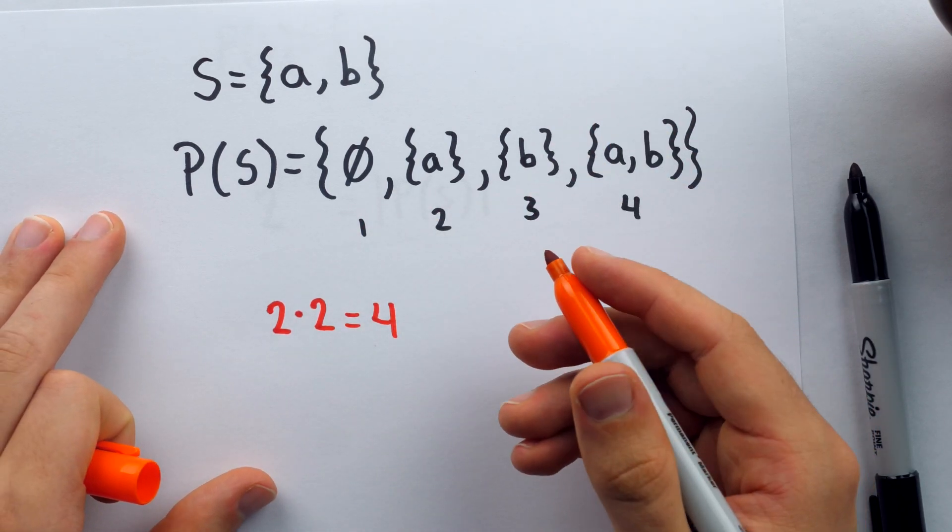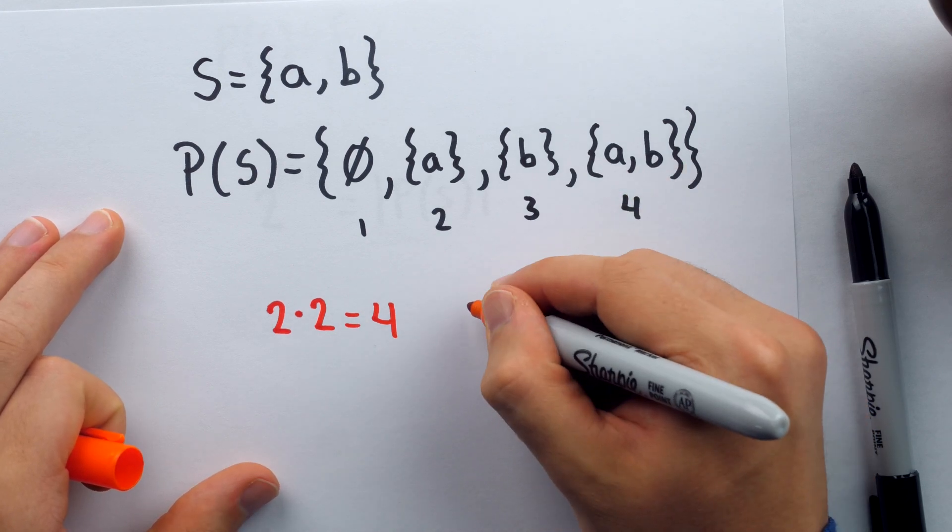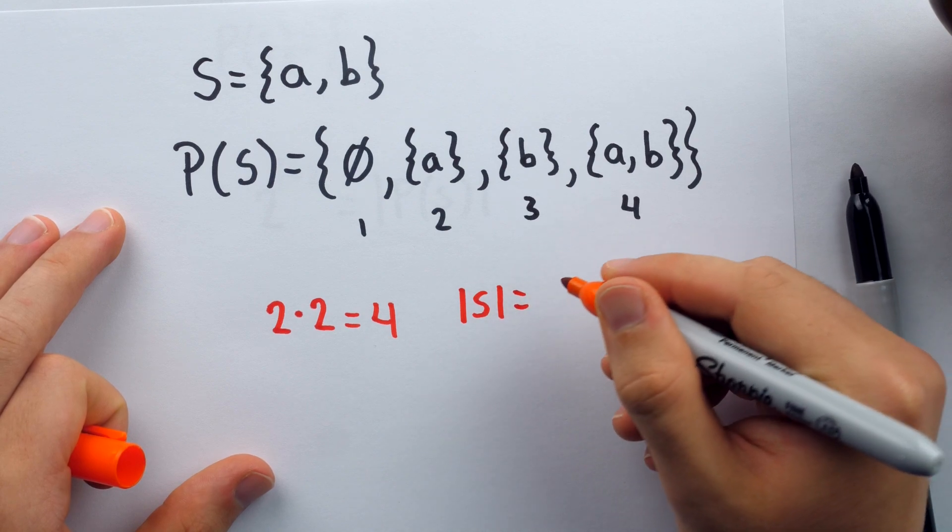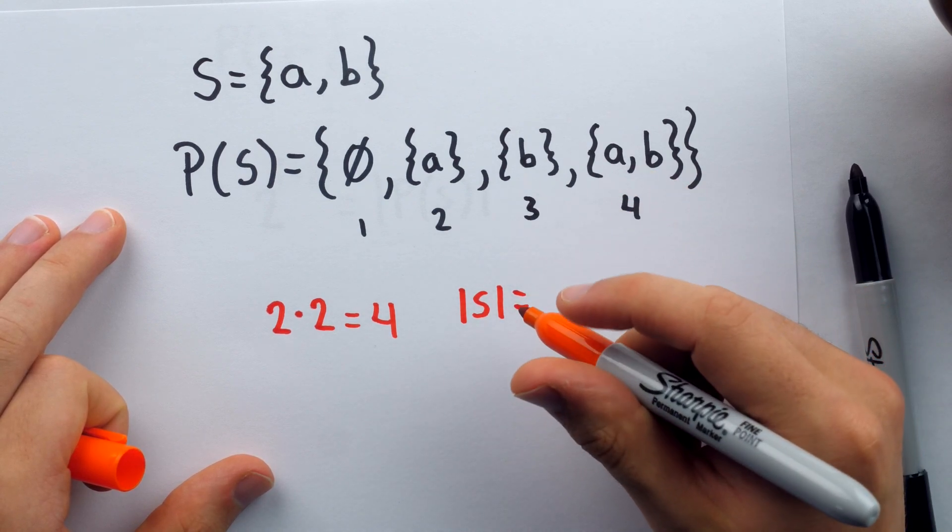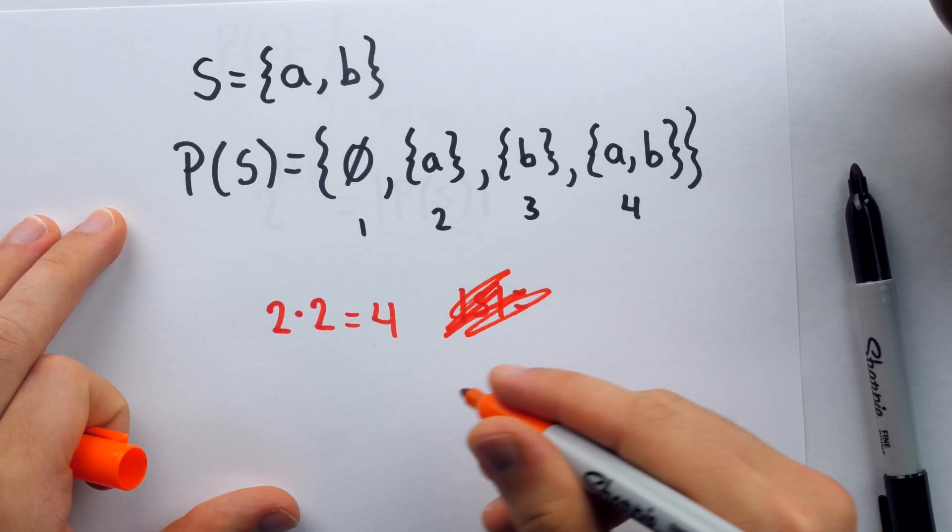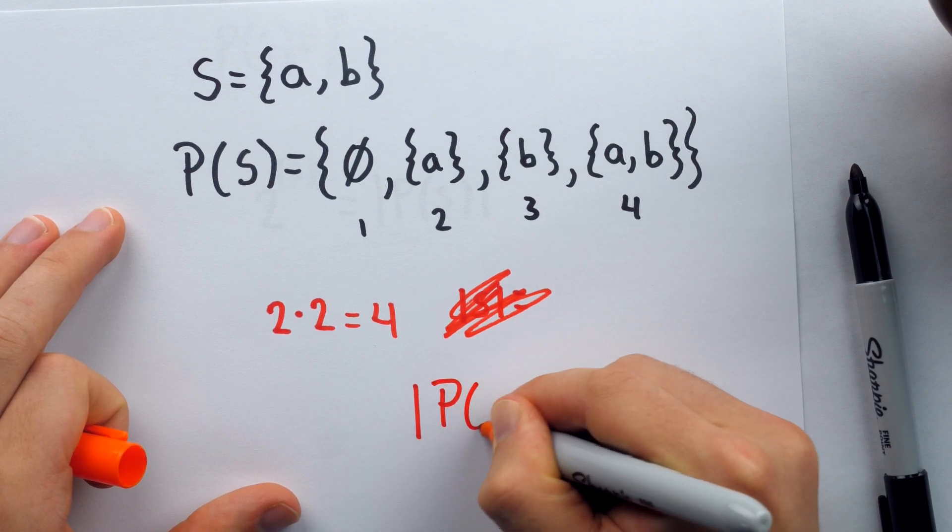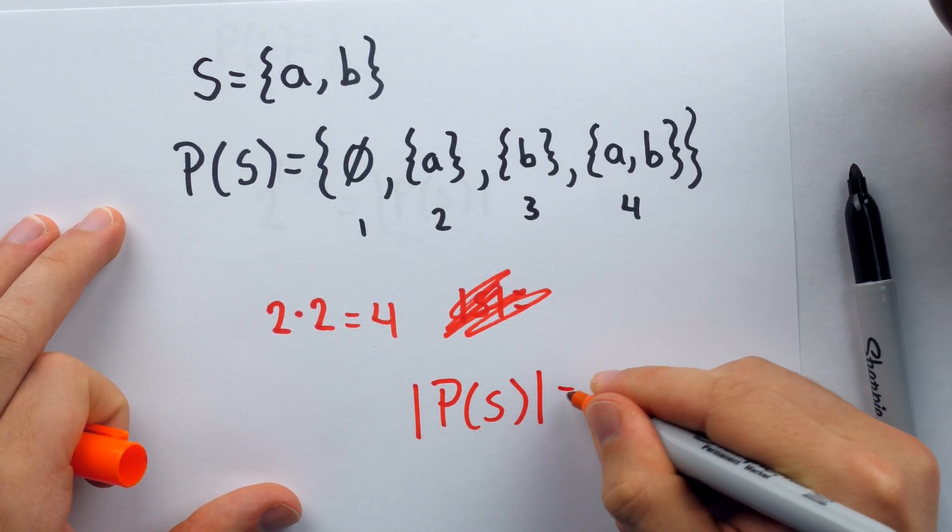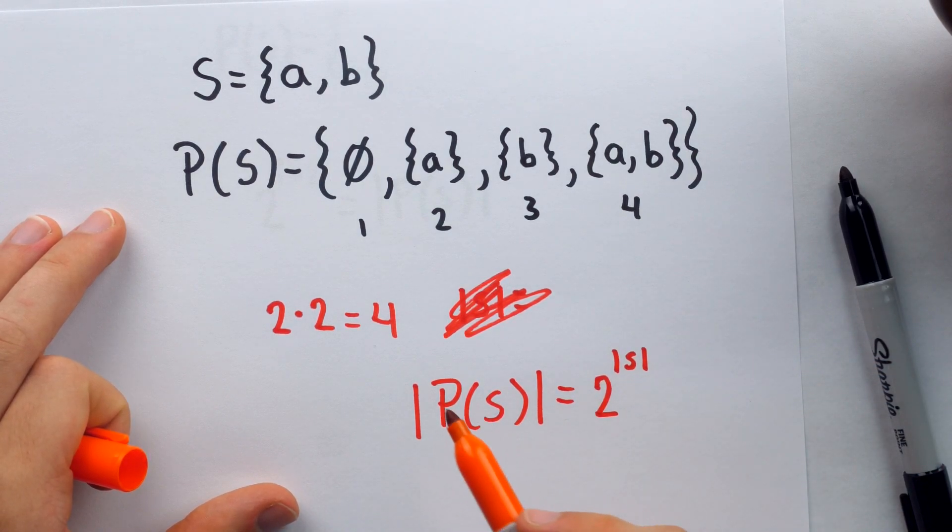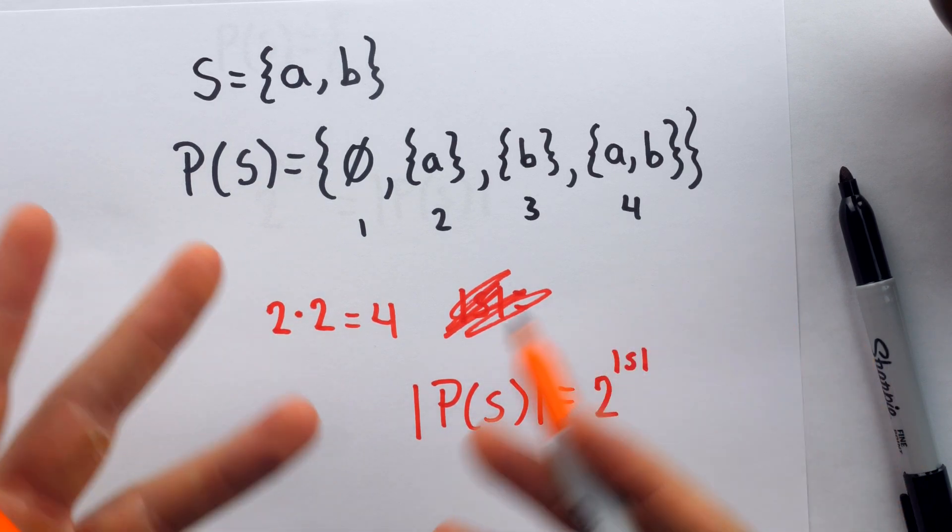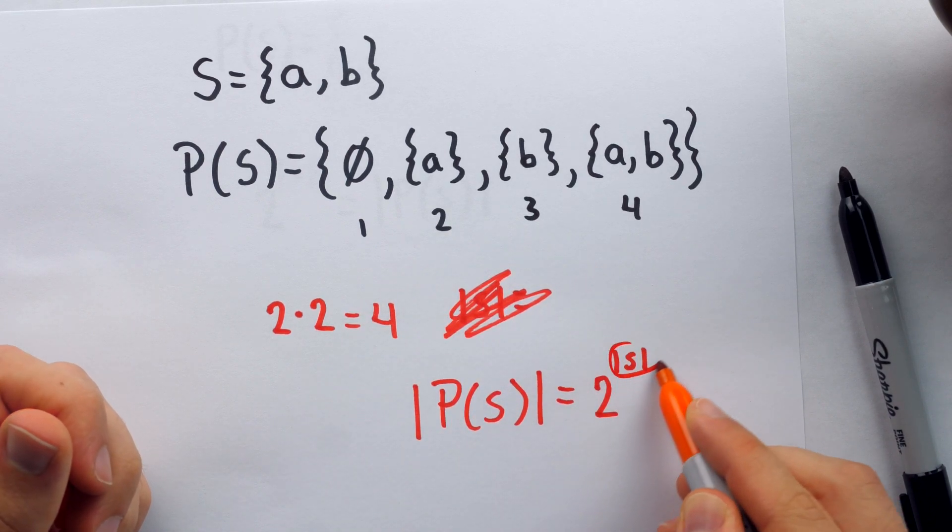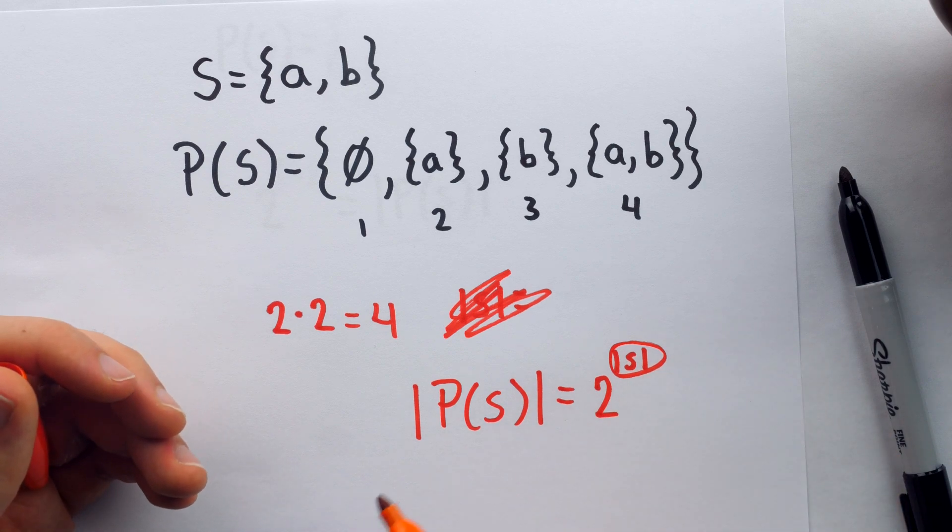In general, if a set has finite order, if a set S has a finite number of elements or cardinality, then the cardinality of its power set is two to the power of this set's cardinality. The cardinality of the power set of S, if S has finite cardinality, is two to the power of the cardinality of S. And that's because the power set contains all the subsets.